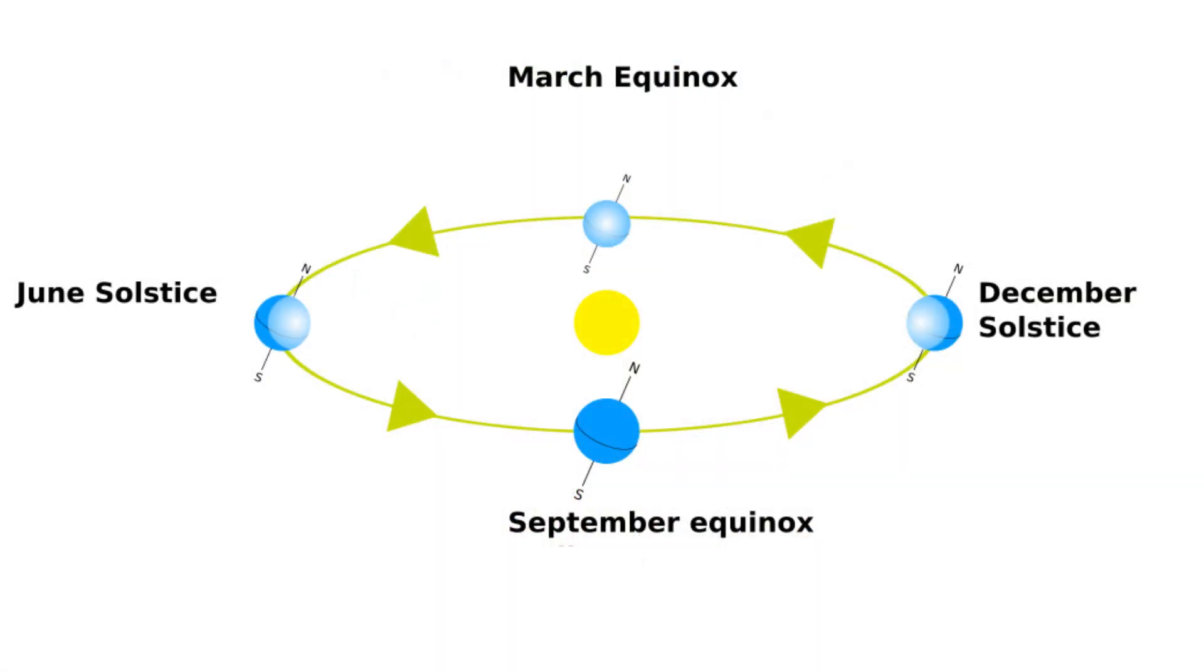May Day is the approximate time of a cross-quarter day, a day that is halfway between an equinox and a solstice. Our calendar emphasizes the equinoxes and solstices, but other calendars mark the seasons with the cross-quarter days. The solstices and equinoxes were the mid-season points in these calendars. The best-known calendar using cross-quarter days was the Celtic calendar.